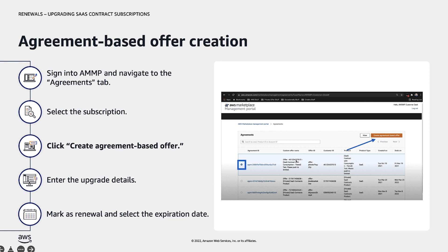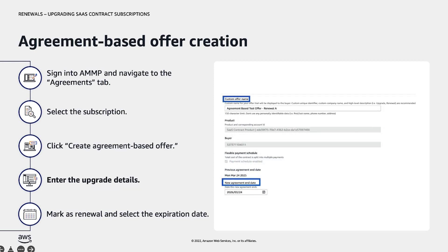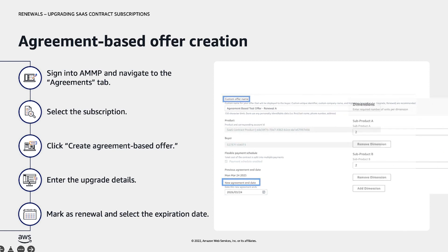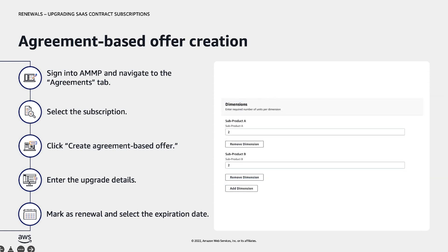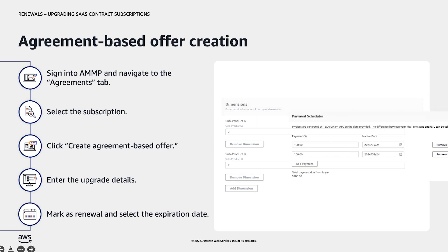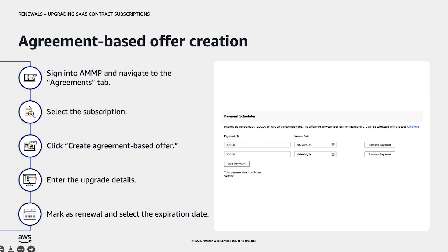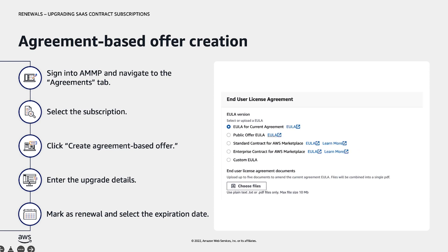Once you have identified the subscription to upgrade, select the agreement by clicking the circle to the left, and then click the button titled Create Agreement-Based Offer. Enter the details for your upgrade, including offer name, agreement end date, dimensions and quantity, additional usage pricing if applicable, agreement payment schedule, and EULA.